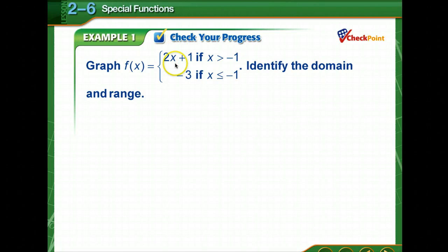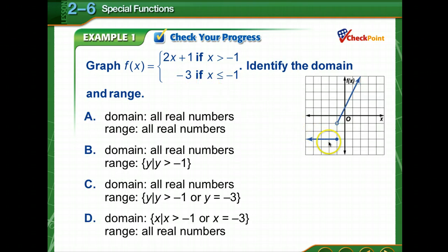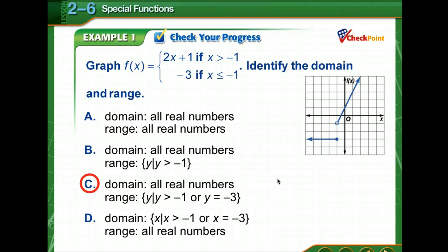When I substitute negative 1 in for x: 2 times negative 1 is negative 2, plus 1 gives negative 1 — so I graph this at (negative 1, negative 1). This doesn't have 'or equal to,' so it's an open circle going greater than. For the other piece, negative 1 gives negative 3 since it's a constant function, with a closed circle at negative 1 going less than or equal to. The domain is all real numbers. The range is y such that y is greater than negative 1, or y equals negative 3.